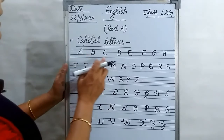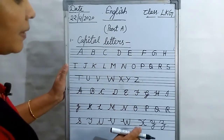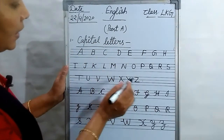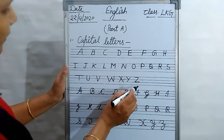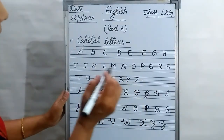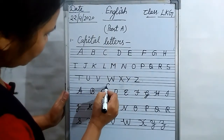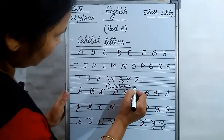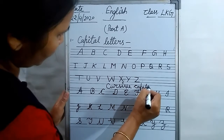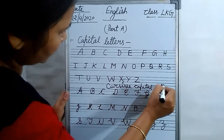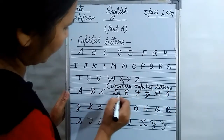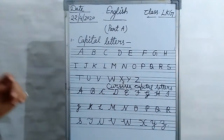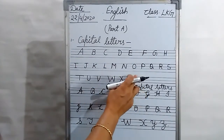Okay, these are capital letters and these are cursive capital letters. Okay, Part A — you have to write these A to Z in your copy. These are simple capital letters and these are cursive capital letters.